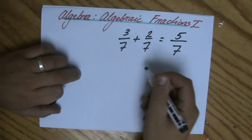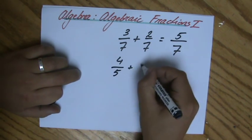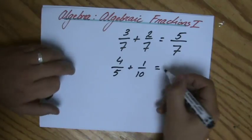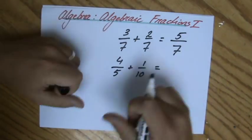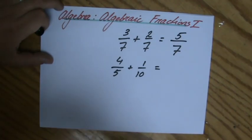But in a different situation, for instance, if I have 4 over 5 plus 1 over 10, I cannot, in this format, just simply add these two fractions. And why is that? Because the denominators are not the same.